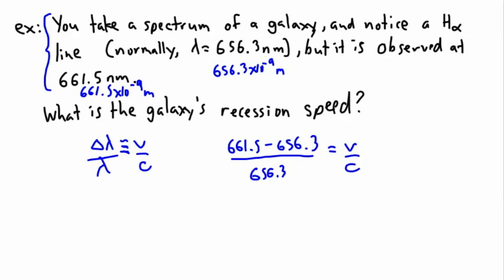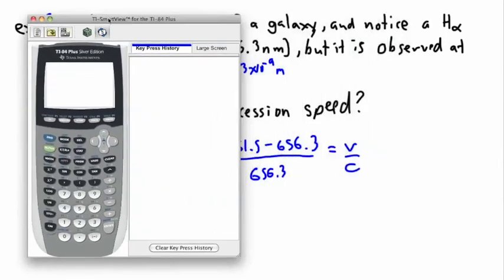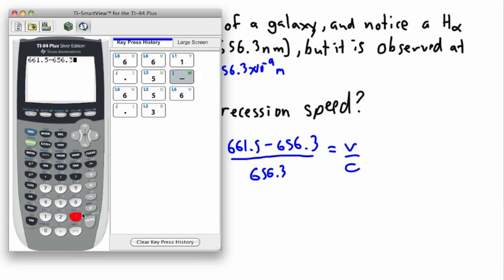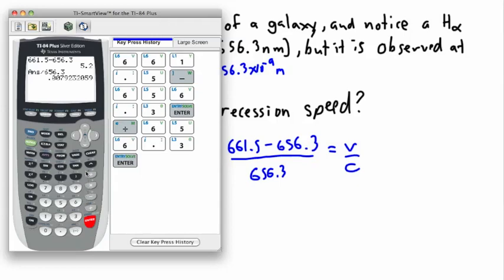So then if I do that, well I better get out my calculator. And I need that ratio. So I need to say 661.5 minus 656.3, enter. And I'll do that answer divided by 656.3, enter. So I get this number, a very very small number. So I get 0.0079, something like that.